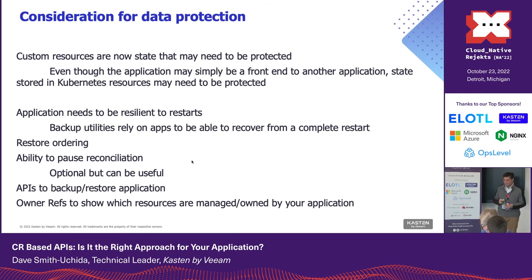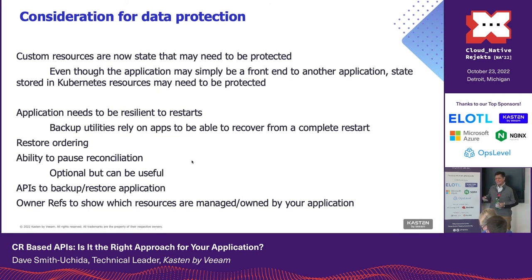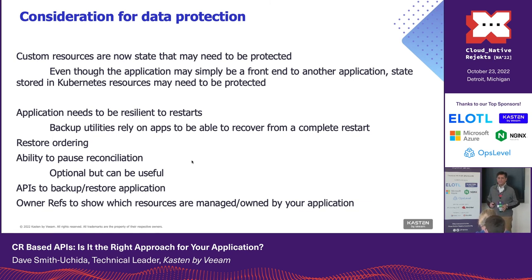Data protection may come into play once you've built your application. If you have state in custom resources, you may need to protect them — really think about what happens if you lose all your custom resources. Anything unique in Kubernetes and important to running your app probably needs to be backed up. On restore it's basically a cold start, so you have to handle that. Think about restore ordering and expose that to the backup application. Having an option to pause reconciliation on the server is nice. Advanced applications can have backup and restore APIs, and doing your owner refs correctly so we know which resources belong to your application is important.